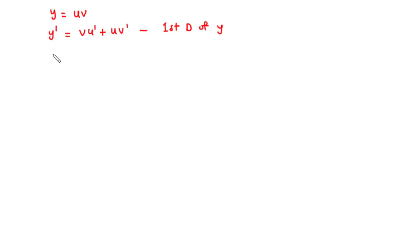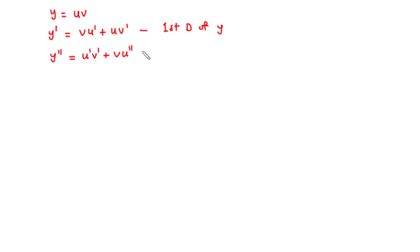Now let's find the derivative of y prime, which we call y double prime. Here we again have products of two functions: v and u prime, and u and v prime. Applying the product rule: we hold u prime and differentiate v to get v prime, plus we hold v and differentiate u prime to get u double prime. Then for the second term, we hold v prime and differentiate u to get u prime.